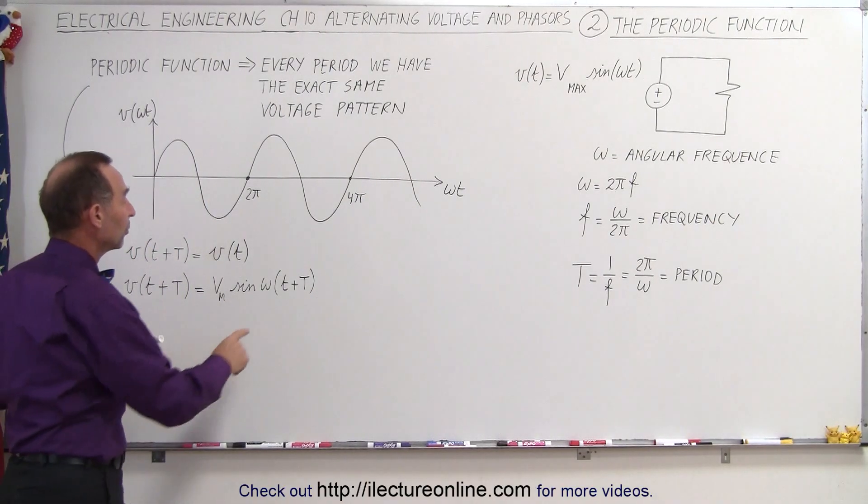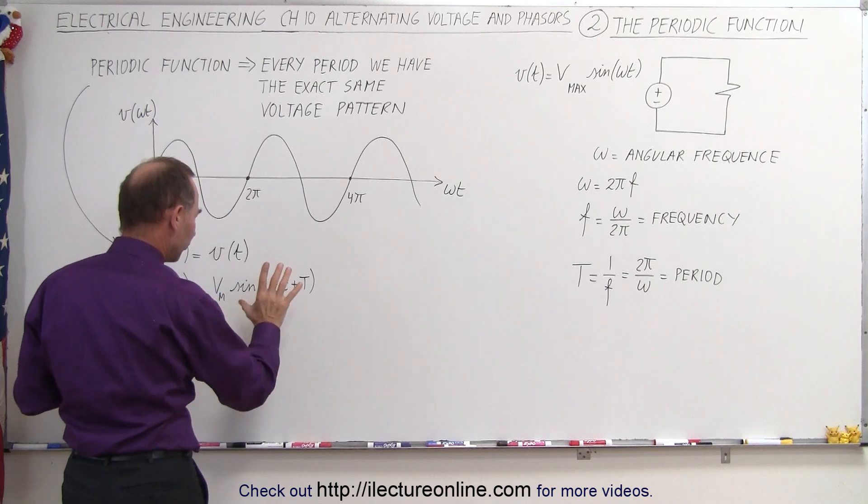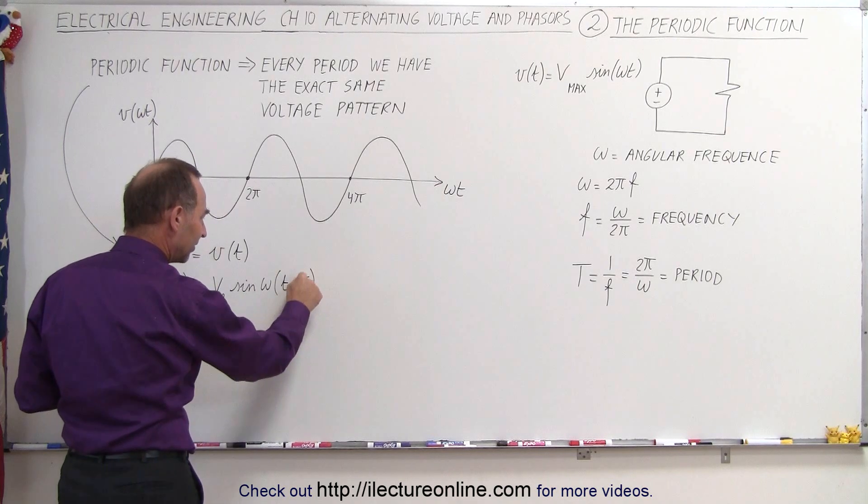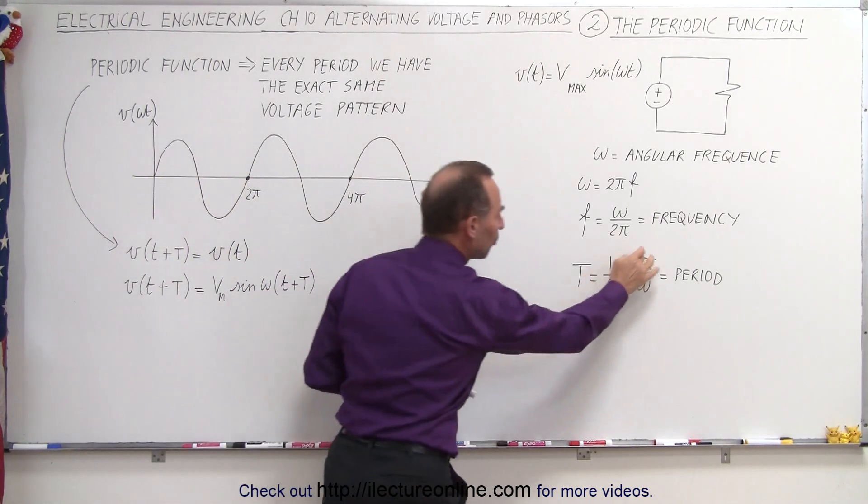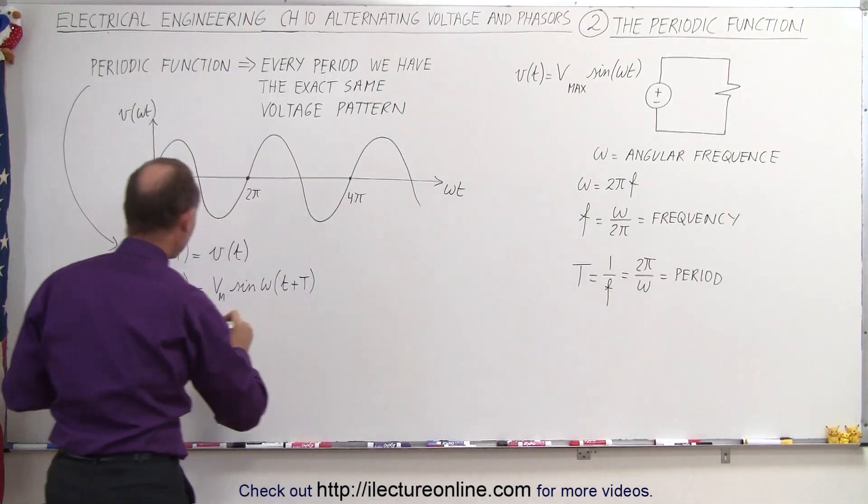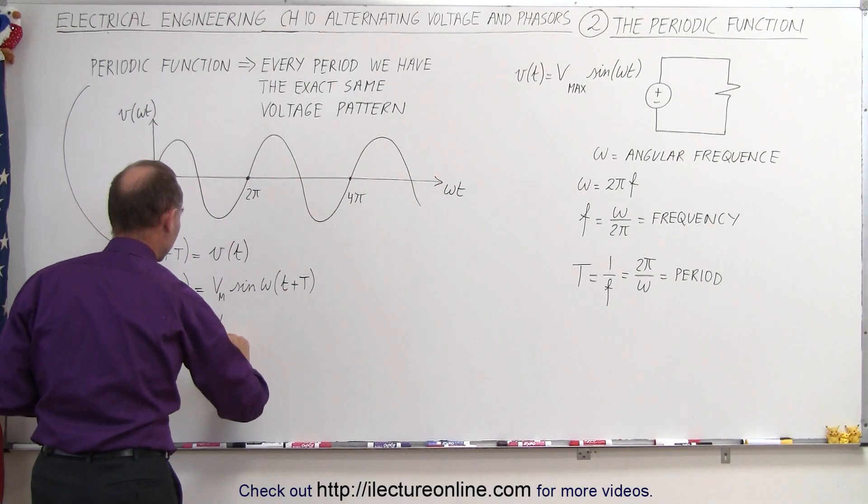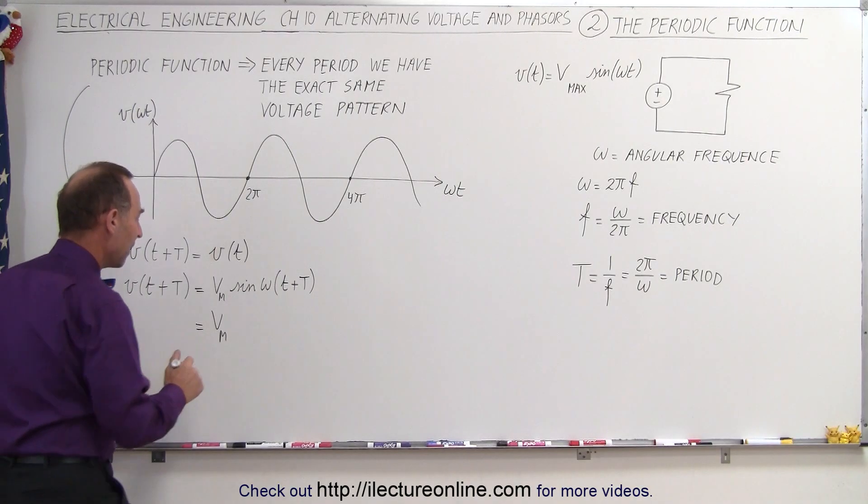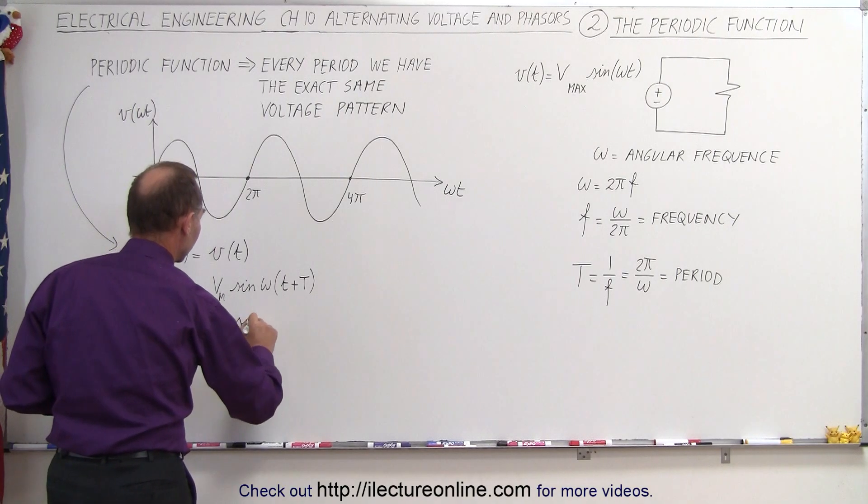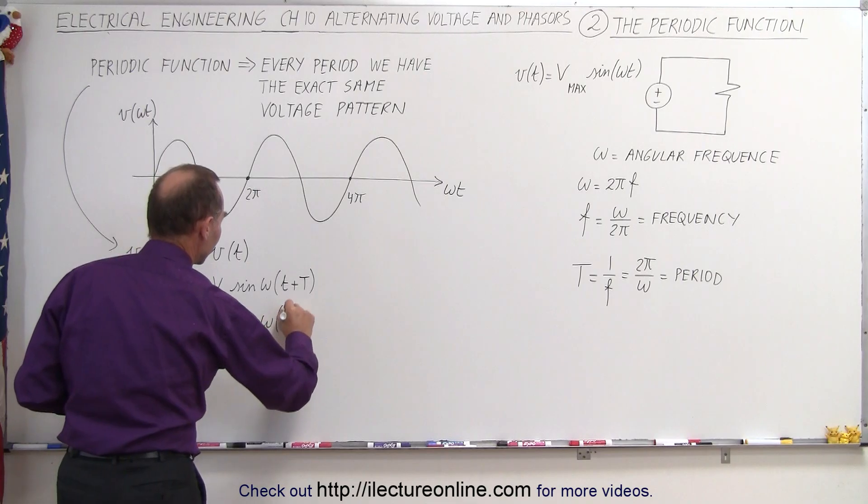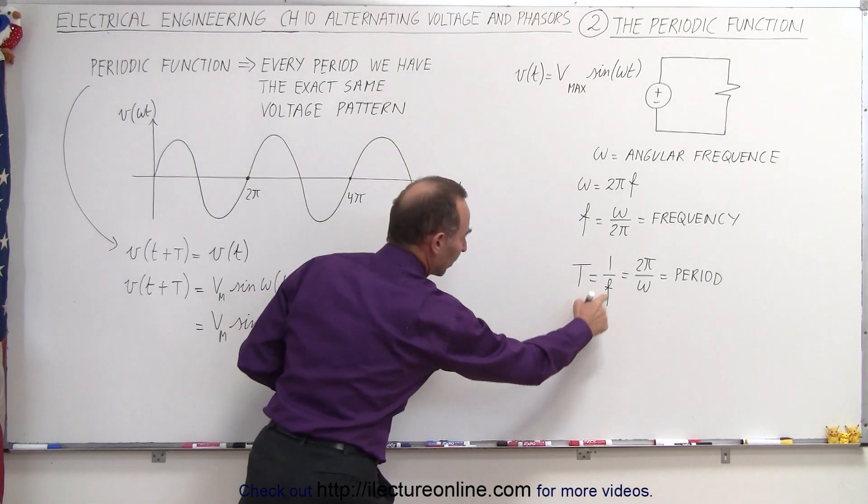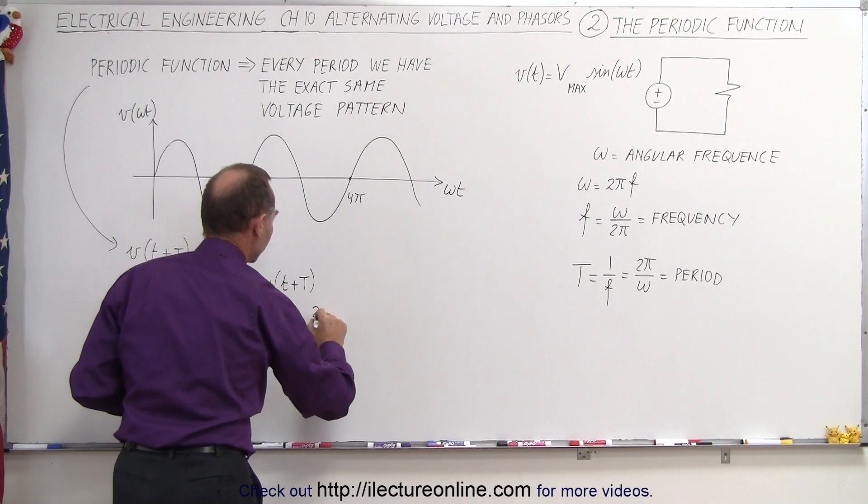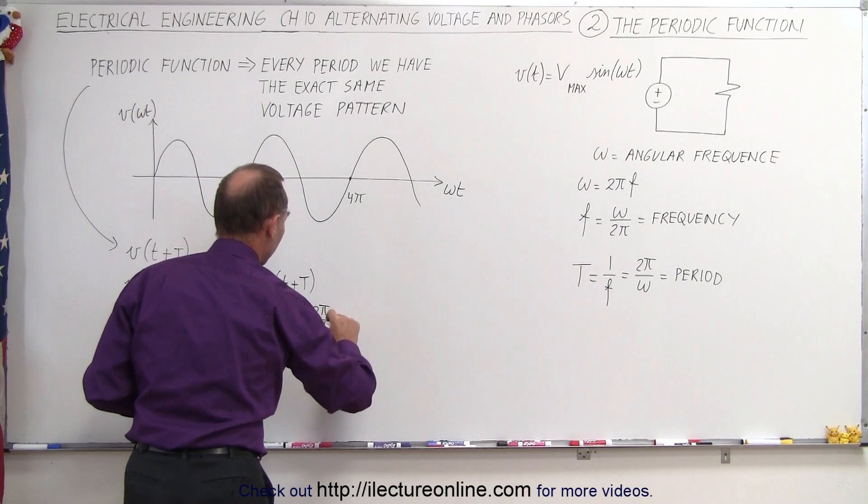And then we're going to show you that that looks exactly the same as the original function. So the next thing we're going to do is multiply this out. Or first, maybe before we do that, let's take the period and write it as 2π over ω. So this can be written as V_max, and we're just going to use the single letter M to notate maximum voltage, equals the sine of ω times t plus, instead of the period, we'll write the equivalent of 2π over ω.